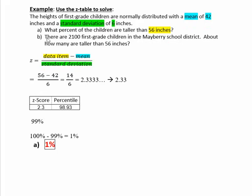Now part B. There are 2,100 first grade children in the Mayberry School District. About how many are taller than 56 inches? So we already know it's about 1% of those children. So now we just need to translate that into how many children that would be.